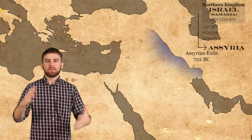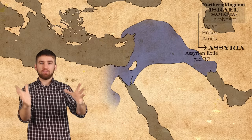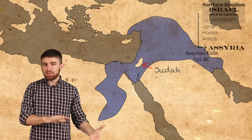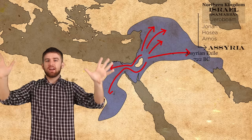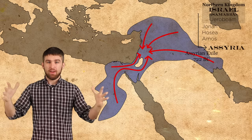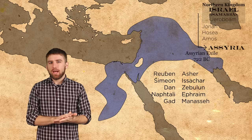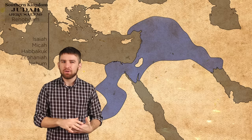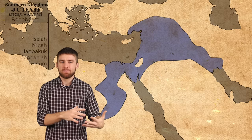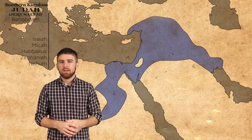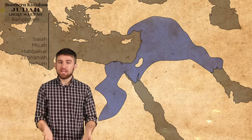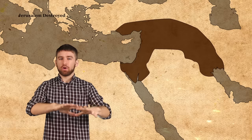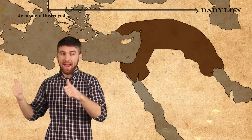In 722 BC, Assyria conquered the northern kingdom of Israel and all the way around the surrounding areas down to Egypt, leaving only Judah. They exiled all of the people of Israel and scattered them throughout the entire kingdom, replacing them with exiles from other areas of their expanding kingdom. The 10 northern tribes were completely wiped from history. The southern kingdom of Judah put up a good fight and survived the Assyrians, but they failed to serve God fully. The Babylonians under King Nebuchadnezzar rose up and wiped out the Assyrian empire and, over the course of about 20 years, conquered and deported all of the Jews from the southern kingdom of Judah back to Babylon.